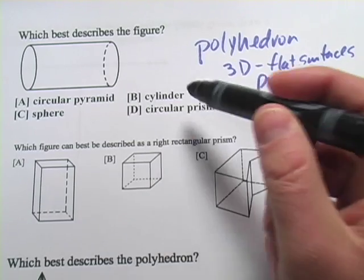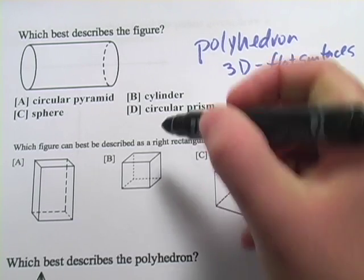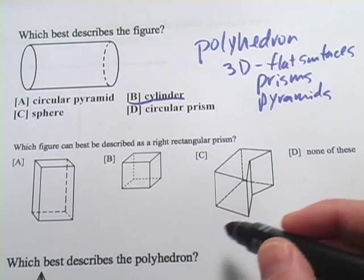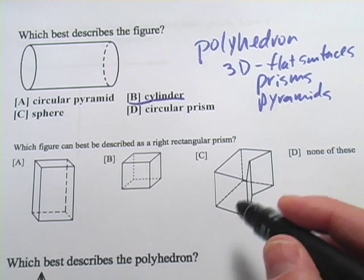A circular pyramid, a sphere, a cylinder, or a circular prism. Probably you know this one is called a cylinder. That's probably a pretty common and well-known shape.